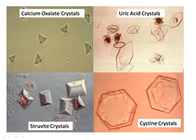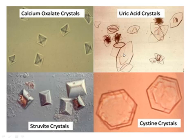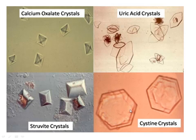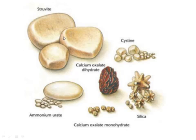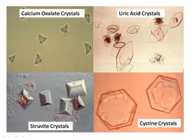Regarding crystal appearances: calcium oxalate crystals are envelope-shaped, like a coffin or rhomboid. Struvite forms large crystals. Uric acid crystals have a distinct shape. Cystine crystals are small and hexagonal. Remember calcium oxalate monohydrate appears as a small silica-like shape, and cystine forms hexagonal crystals.